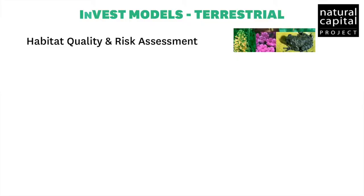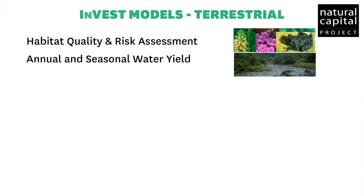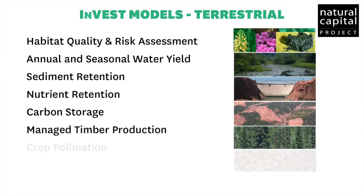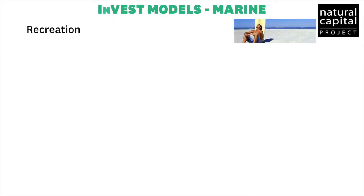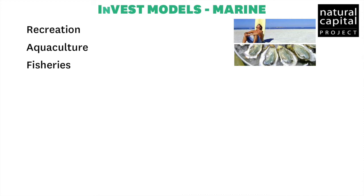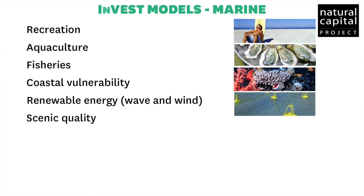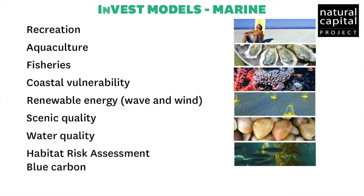Historically, we've grouped InVEST into different kinds of models depending on whether they're freshwater and terrestrial models or coastal and marine models. As of InVEST 3.3, there are 19 models in all. The freshwater terrestrial models are habitat quality, annual and seasonal water yield, sediment retention, nutrient retention, carbon storage, managed timber production, crop pollination, and crop production. The coastal and marine models in the InVEST suite are recreation — also applicable to terrestrial recreation — aquaculture, fisheries, coastal vulnerability, renewable energy from waves and wind, scenic quality, water quality, habitat risk assessment, and blue carbon.